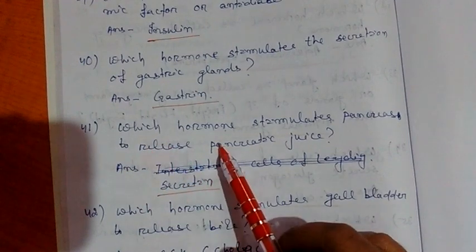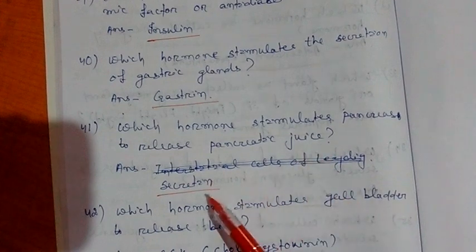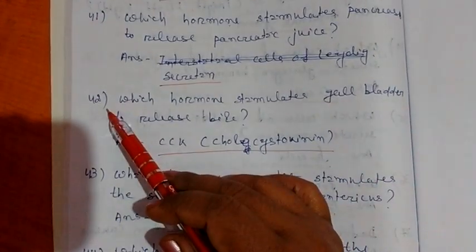Which hormone stimulates pancreas to release pancreatic juice? Answer is secretin. Next question number 42.